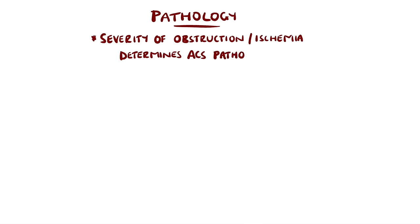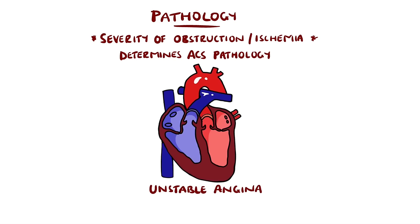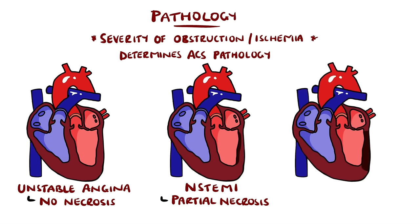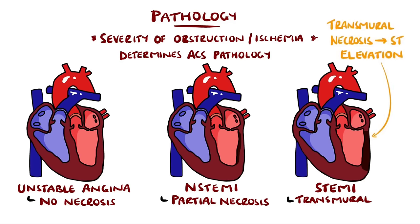In unstable angina, the myocytes are ischemic but are not yet necrosed, and no cell death has occurred. In non-ST elevation myocardial infarction and ST elevation myocardial infarction, there is death of some of the myocytes. The non-ST and ST portion of the name refers to the elevation of the ST segment in the ECG. In STEMI, there is typically a complete occlusion of the coronary artery, and therefore transmural necrosis, meaning the death of the cardiac myocytes extends across the entire thickness of the wall. Whereas in NSTEMI, this only extends through a portion of the wall.